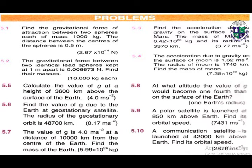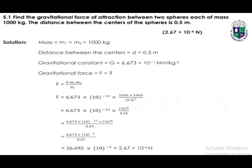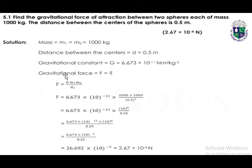Next we have numerical type questions from 5.1 to 5.10. Question 5.1: find the gravitational force of attraction between two spheres, each of mass 1000 kg. We have two spheres; m1 and m2 are both 1000 kg. The distance between the centers of the spheres is 0.5 meters. The gravitational constant G is 6.673 × 10⁻¹¹ N·m²/kg².